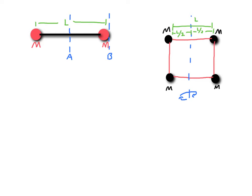Let's solve a couple of problems using point masses. In the first one, I have two point masses, both of mass M, separated by a length L by a massless rod. We're spinning them around axis A, located perfectly in the middle — at the center of mass, exactly at L over 2. We'll solve for rotational inertia there. The equation is the sum of each mass times the distance to the axis squared. The mass to the left is at negative L over 2, and to the right at positive L over 2.